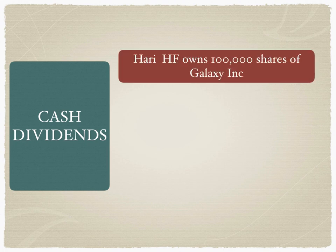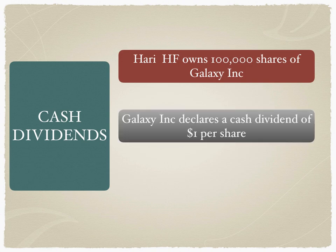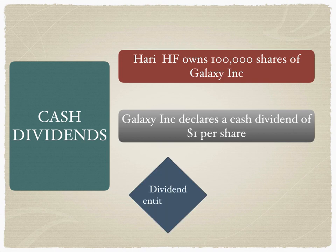Let's take an example of how this announcement appears as a dollar value per share. Hari Hedge Fund — my favorite hedge fund — owns 100,000 shares of Galaxy Inc., and Galaxy Inc. has declared a cash dividend of $1 per share. What is the dividend entitlement for Hari Hedge Fund? This is a mandatory corporate action because the company has declared a cash dividend.